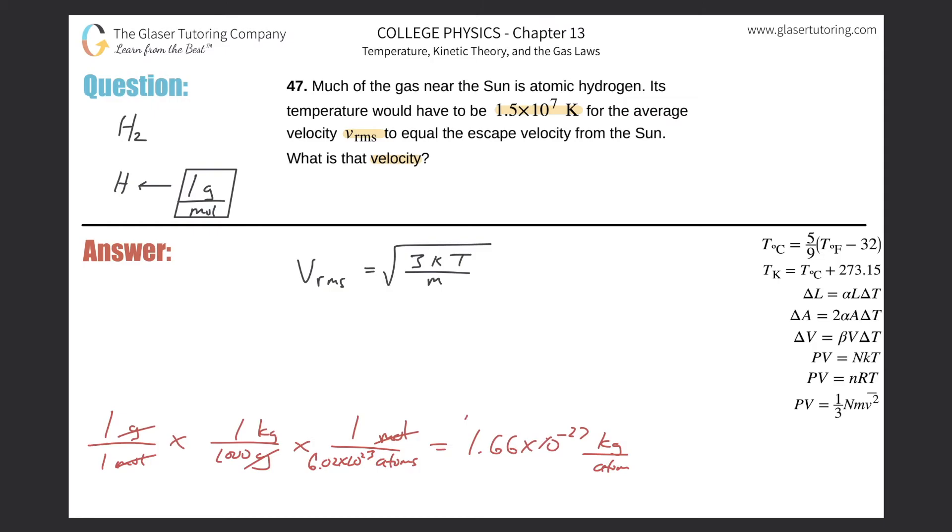Anytime you have per anything here, that's going to be per one of those things, so this is essentially the mass of a single atom of hydrogen. All we now need to do is plug everything in. V sub rms will be equal to the square root of three multiplied by that Boltzmann constant of 1.38 times 10 to the minus 23rd times that temperature they told us in Kelvin, 1.5 times 10 to the seventh, and then divide that whole thing by the mass of a single atom, which is 1.66 times 10 to the minus 27.